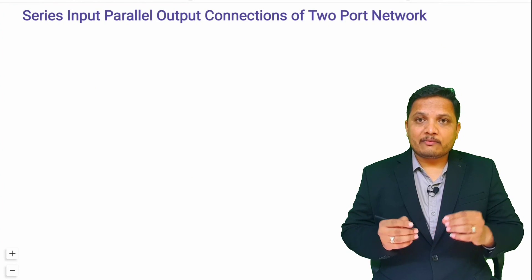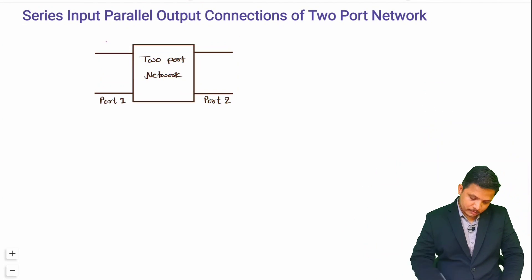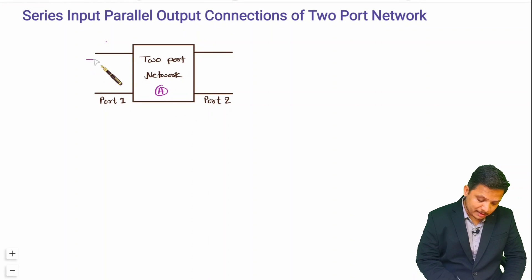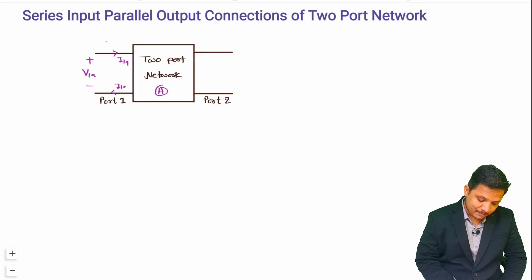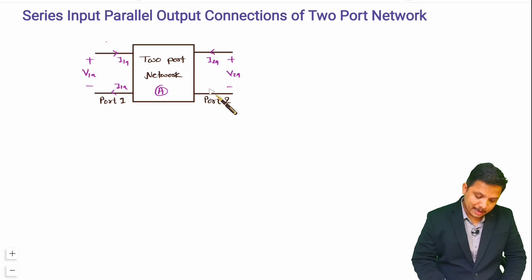First, let me draw one two-port network. This is two-port network A. At port 1, the voltage is V1A, the current going inside is I1A, and the current coming out is also I1A. At port 2, the voltage is V2A, the current going inside is I2A, and the current coming out is I2A.